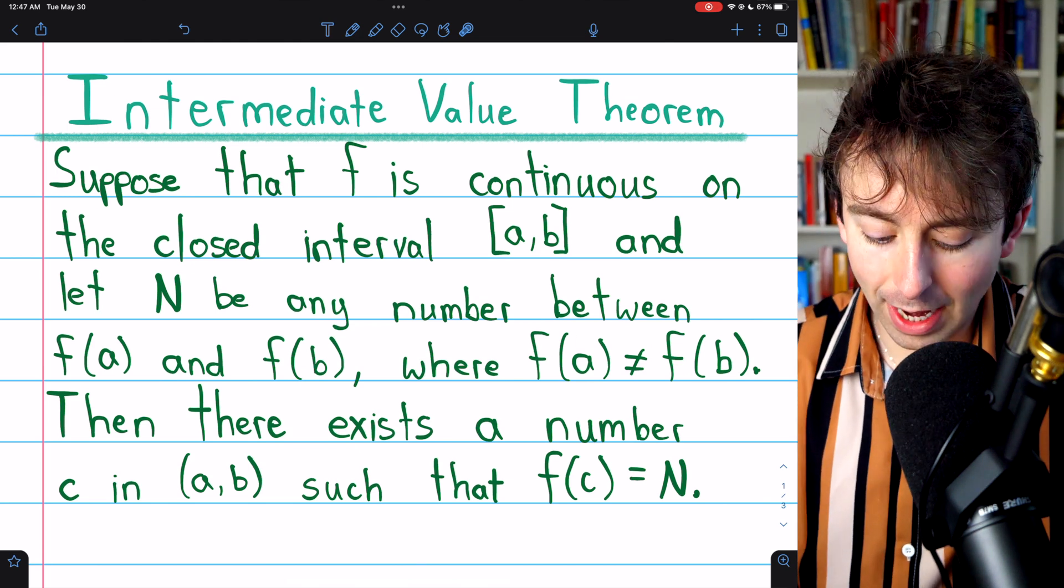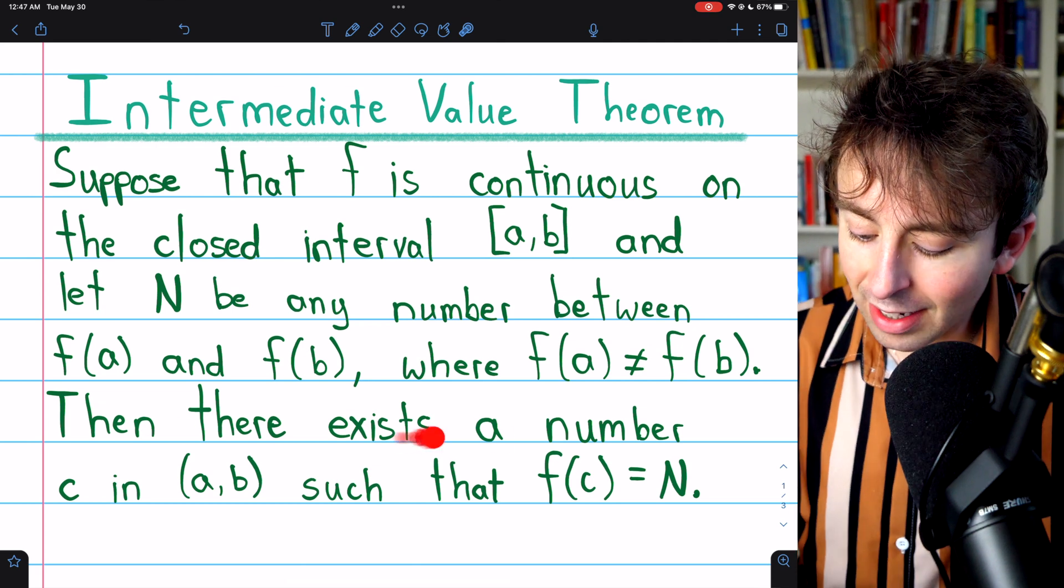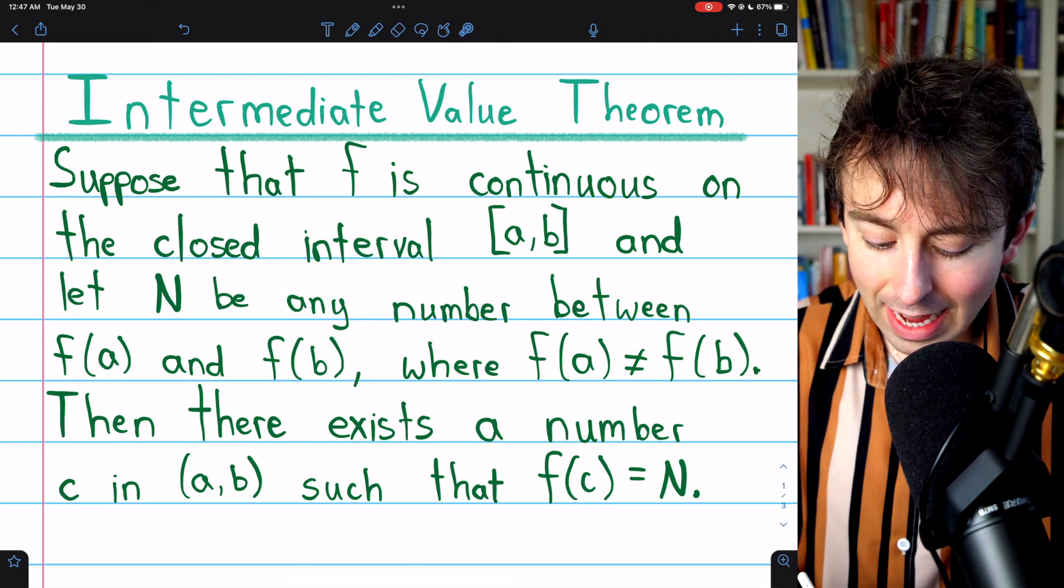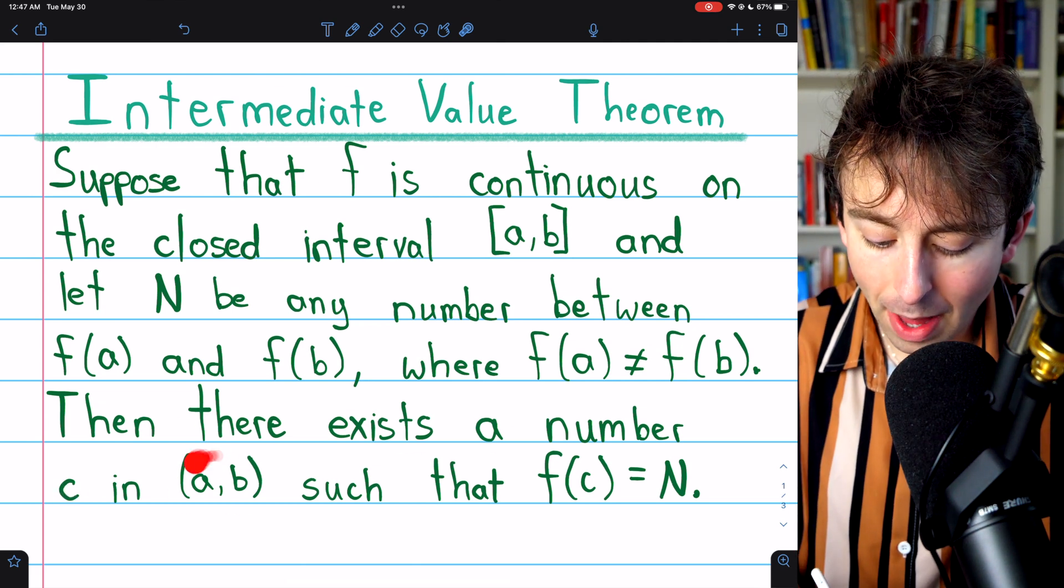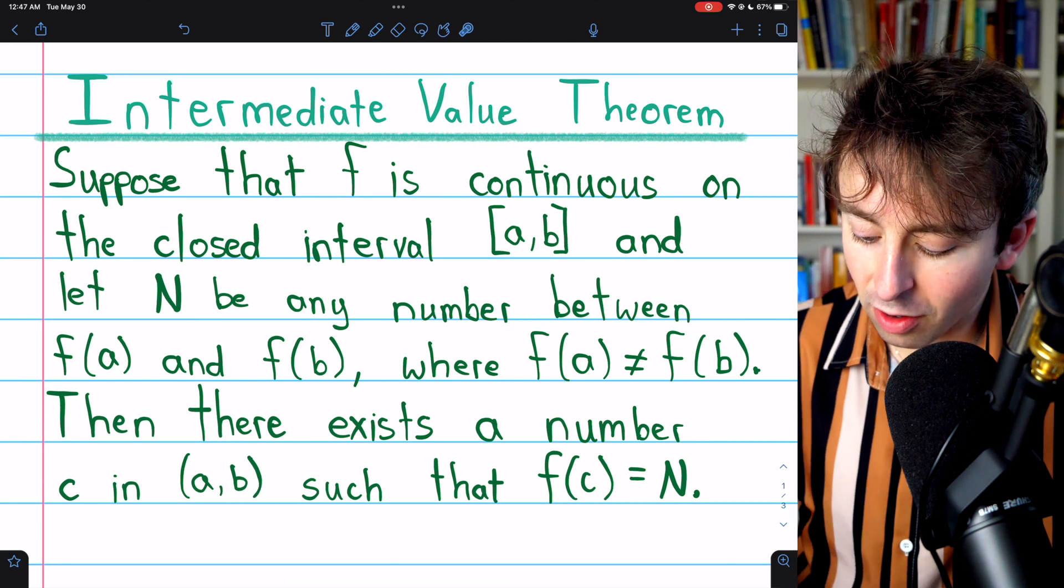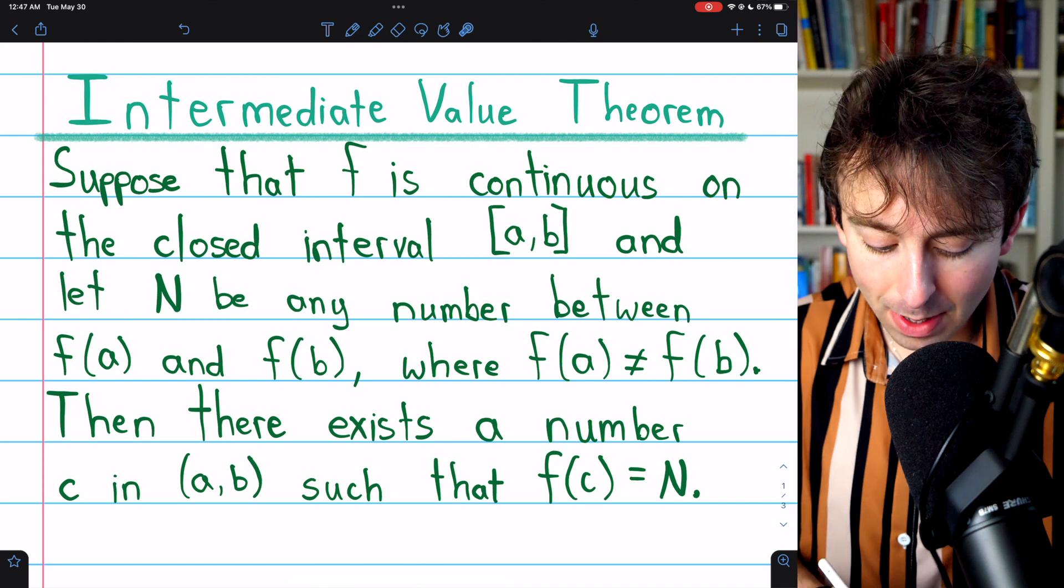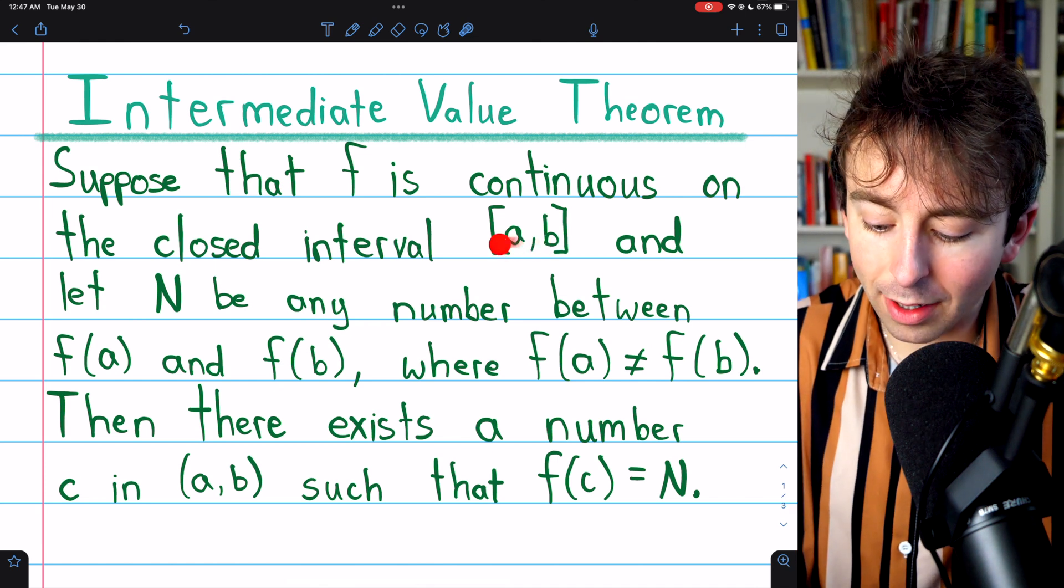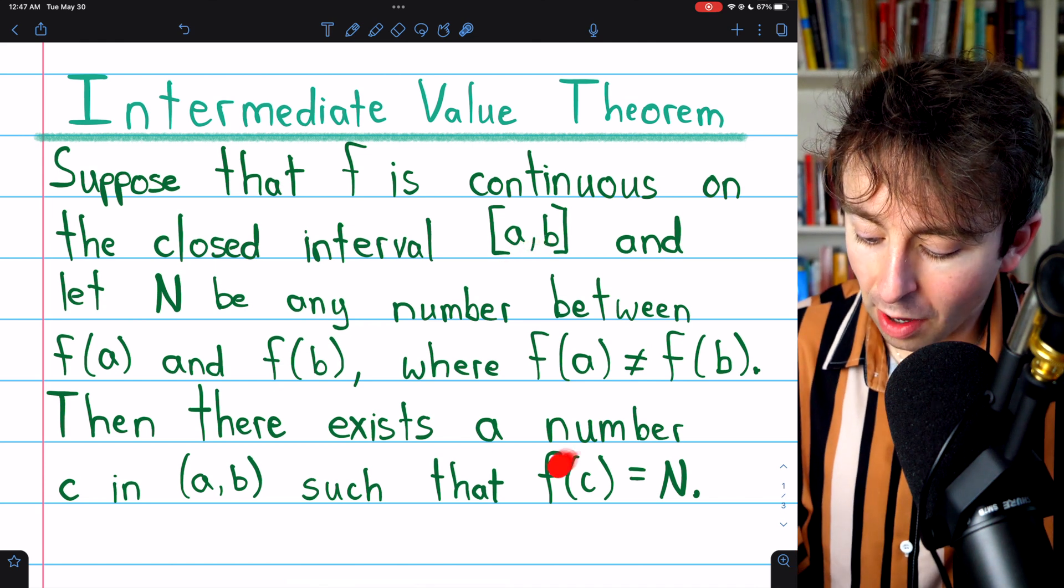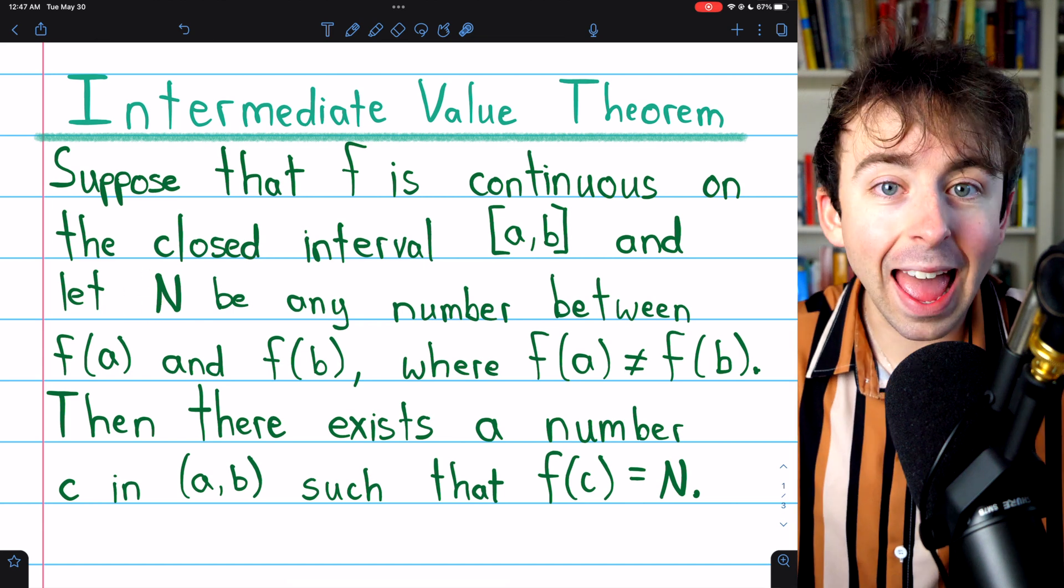So the starting value is different from the ending value. Then there must exist a number c in the open interval (a,b) such that f(c) = N. There must be some point in between the start and the end where the function takes on this value N.